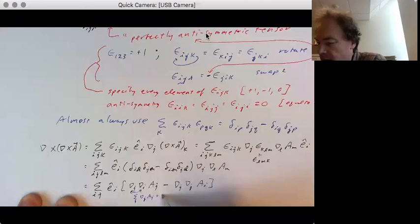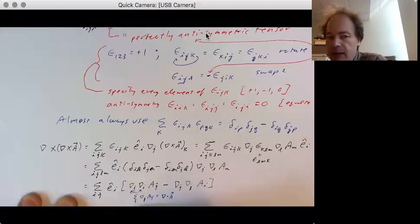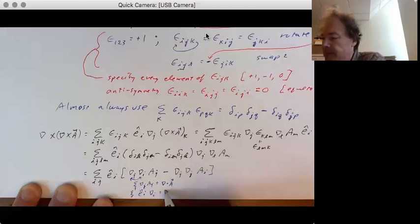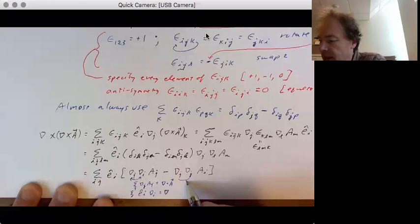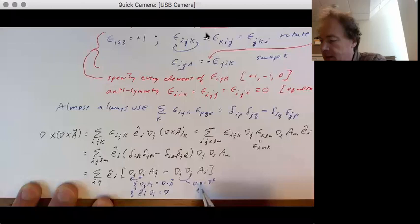And sum over j, del j, a j is equal to del dot a. And that's, and we also have the other relation here that e hat i, sum over i, e hat i, del i is equal to del as the vector.